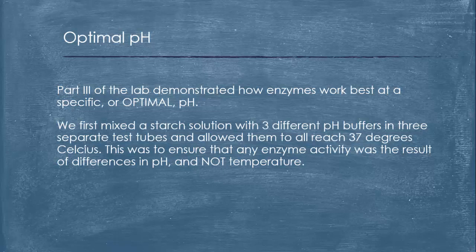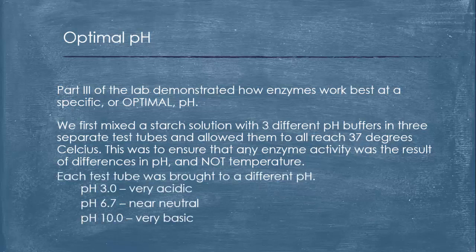Part three of the lab demonstrated how enzymes work best at specific or optimal pH. We first mixed the starch solution with three different pH buffers in three separate test tubes and allowed them to all reach 37 degrees Celsius. This was to make sure that any enzyme activity was the result of differences in pH and not temperature. In each test tube we brought to a different pH: one was at 3.0, that's very acidic; pH of 6.7, which is near neutral; and pH of 10, which is pretty basic.